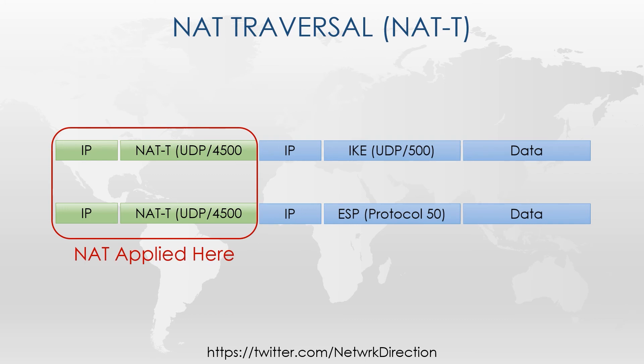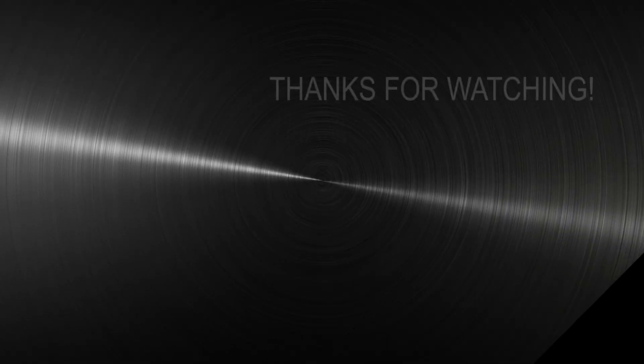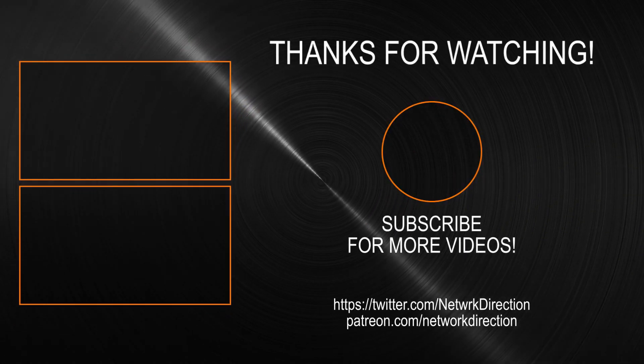This is important to know if you're troubleshooting. If you see UDP port 500 in your logs, then you're not using NAT-T. If you see port 4500, then you are using NAT-T. When the traffic is forwarded through a router that applies NAT, only the outside headers are modified. The original headers are left intact. A NAT-T aware device at the other end will remove the outside headers and process the IPsec traffic as normal.